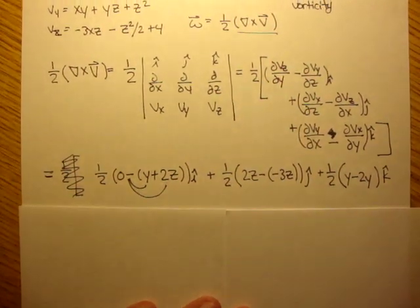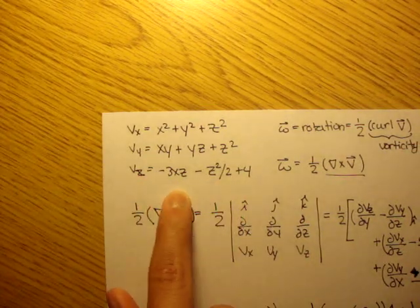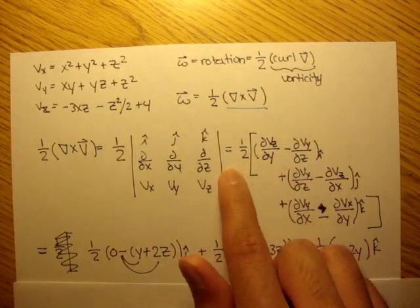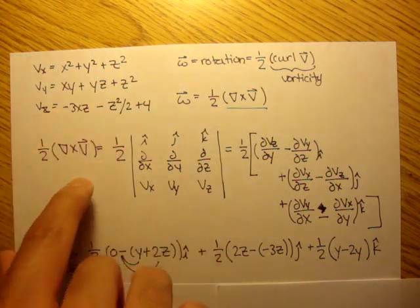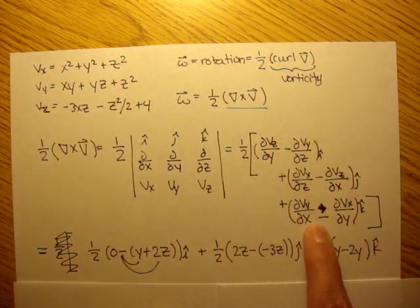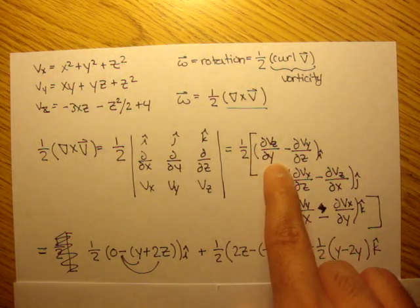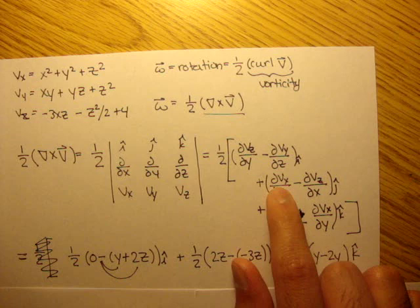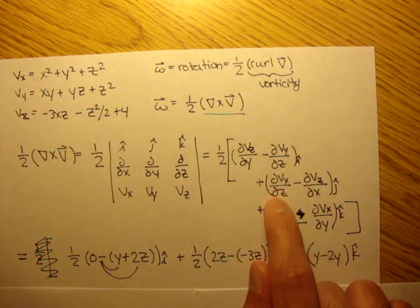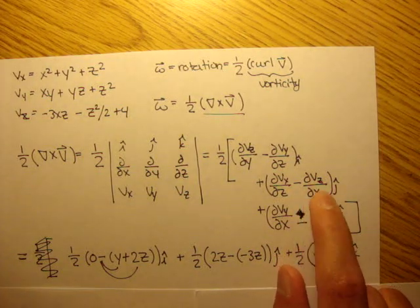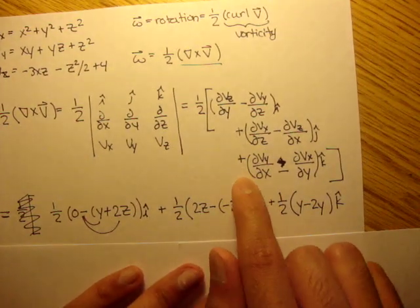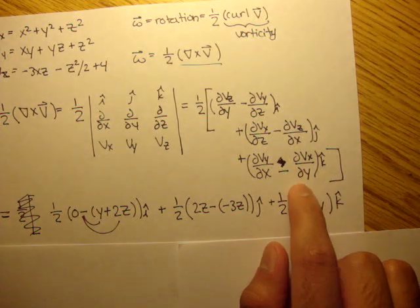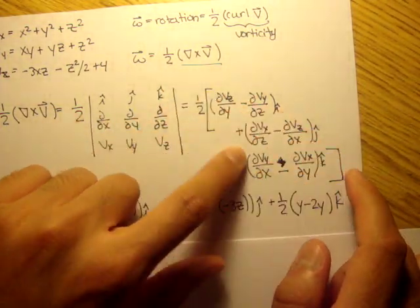So let's solve this out. I already did the partials in the last video. If you want to stop the video and find out the partials here, just for your own practice, you can do that. But basically, our rotation vector is equal to one half of the entire quantity of the partial of v of z in respect to y minus the partial of v of y in respect to z in the i direction, plus the partial of v of x in respect to z minus the partial of v of z in respect to x in the j direction, plus the partial of v of y in respect to x minus the partial of v of x in respect to y in the k direction. And all of this times 1 half.